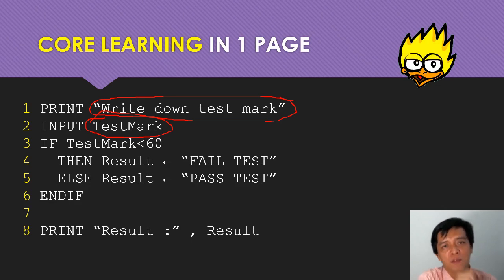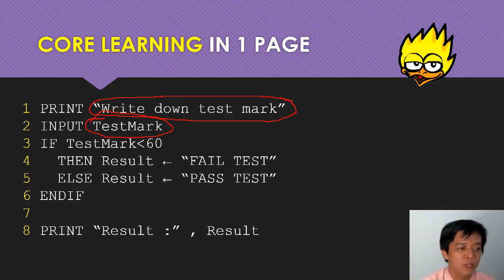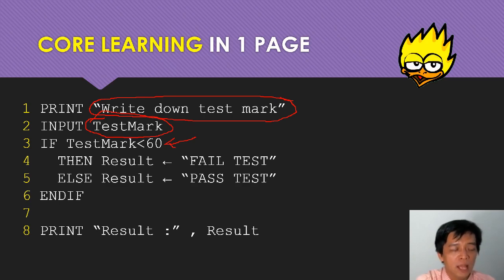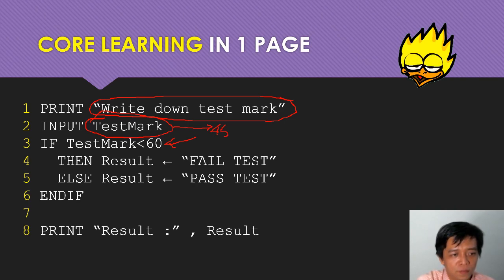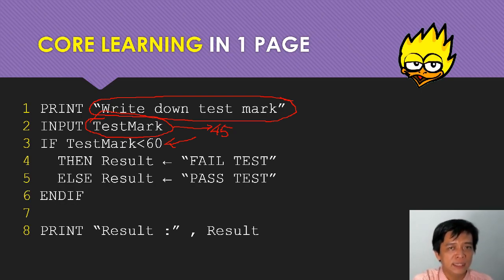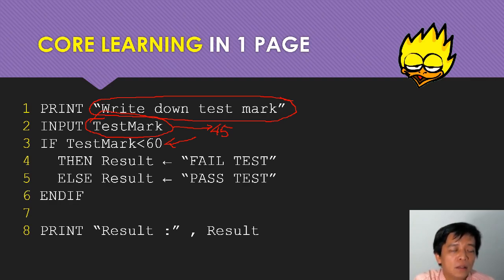Let's say you type down 45. The computer will remember: 45 is the test mark that you input. Then you go to the third line. If test mark is below 60 - you put down 45 - if the test mark is under 60, then 45 is under 60, so the result is fail test.